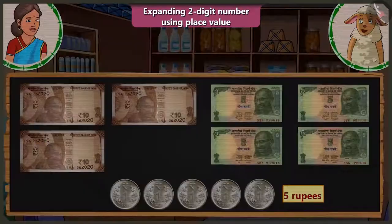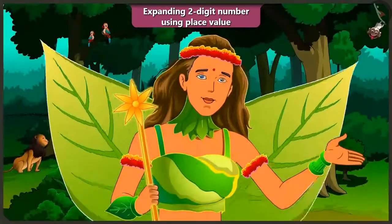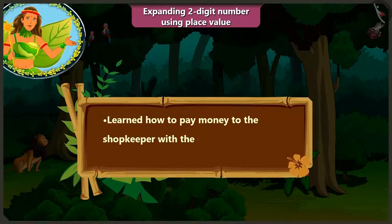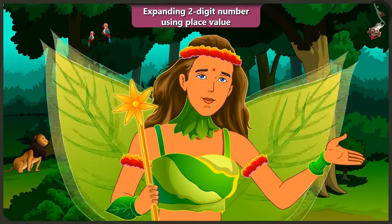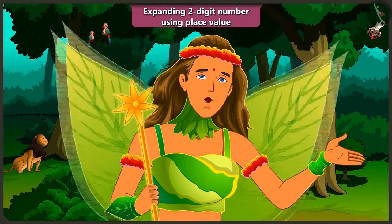Absolutely right, Lily. So, Aunty, take these 5 rupees. Thank you, Lily. Children, today after doing some shopping, we have learned how to make the payment to the shopkeeper with the help of notes and coins. In the next video, we will learn to add numbers to a group.